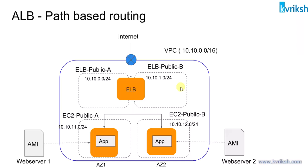You could have an application URL with a domain name like myapp.com/v1 that should go to a different set of EC2 instances, and if it's myapp.com/v2 then it should go to a different set of EC2 instances. This kind of routing is called URL-based routing or path-based routing.